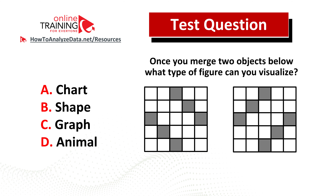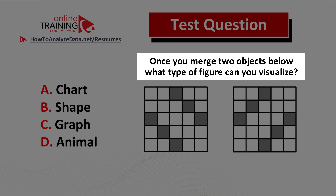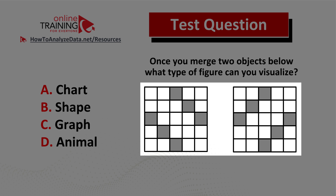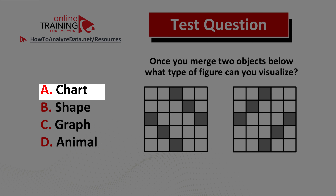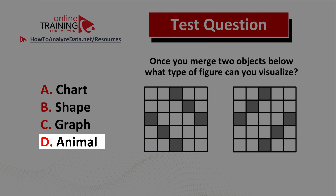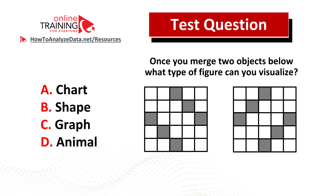Let me share with you a tricky question which tests your visualization skills. Once you merge two objects below, what type of figure can you visualize? You are presented with two 5x5 squares, each with white and shaded boxes. You are supposed to merge them and decide which shape you can visualize out of four choices: choice A chart, choice B shape, choice C graph, and choice D animal.